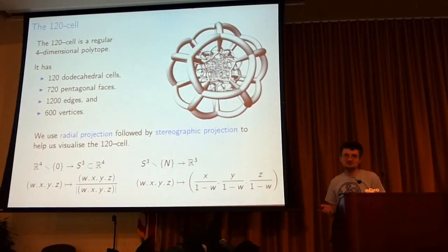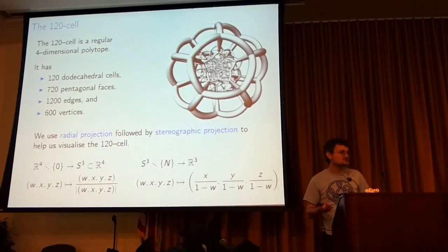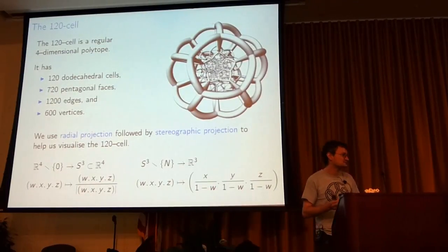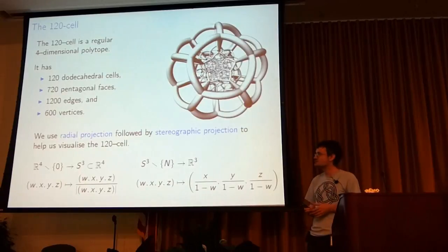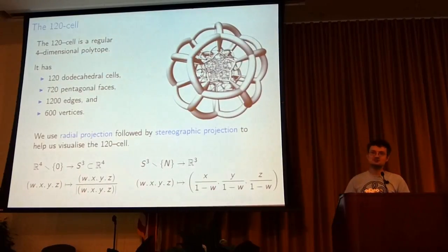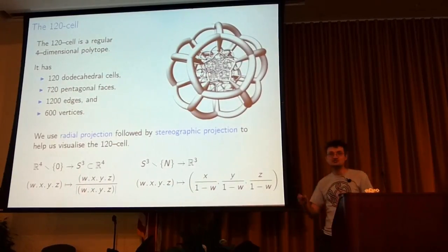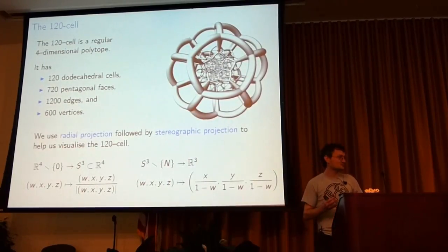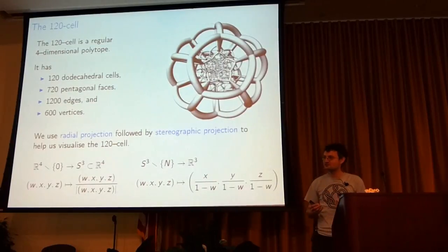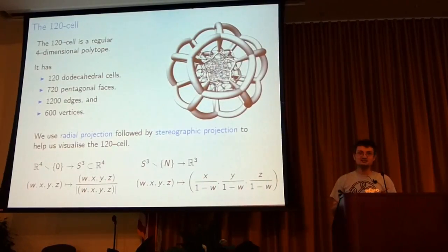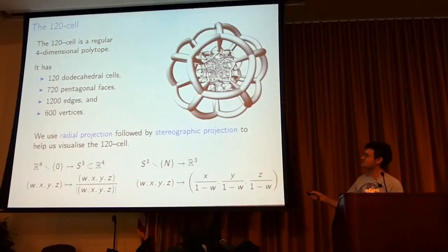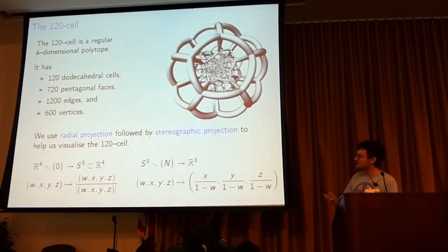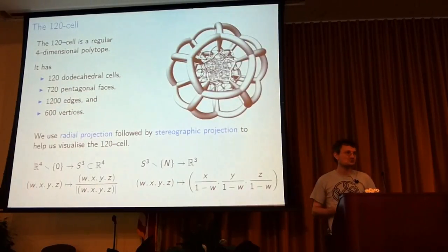How do we visualize this picture? We need some way to take a four-dimensional object and get it into three dimensions so we can see pictures of it or 3D print it. So we do this in a two-stage process. The first is radial projection. You've got something sitting there in four-dimensional space, and we're going to radially project it onto the unit sphere in four-dimensional space, which is also called the three-sphere. And then the second step is stereographic projection.